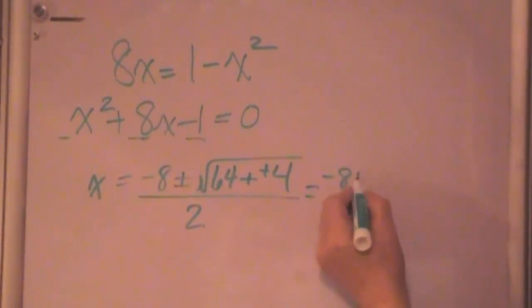So I get minus 8 plus or minus the square root of 68 all over 2. Now reduce this—I'm not going to take the time to reduce this, but reduce this, get a factor out here that's divisible by 2, and then you can cancel out.